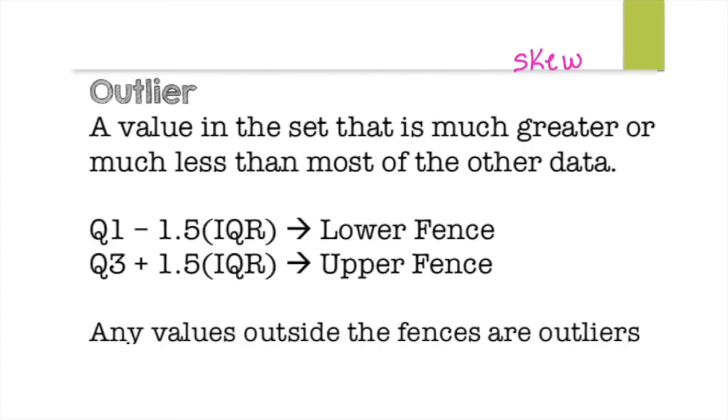So any values that are outside those fences, after you get your answers for the lower fence and the higher fence, if the numbers are outside those fences, then they're outliers. Just like thinking about a movie, if somebody is outside the line of the fence, then they're considered an outlier. They're an outcast. They're not allowed in.